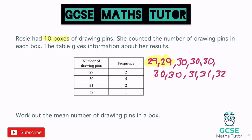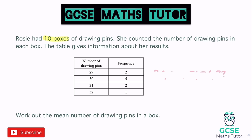Two 29s add together to give 58. Five 30s give a total of 150. Two 31s give 62, and one 32 gives 32. Now, instead of writing out the full list, we can take this approach directly from the table: times the number of drawing pins by the frequency for each row. So 29 × 2 = 58, 30 × 5 = 150, 31 × 2 = 62, and 32 × 1 = 32.